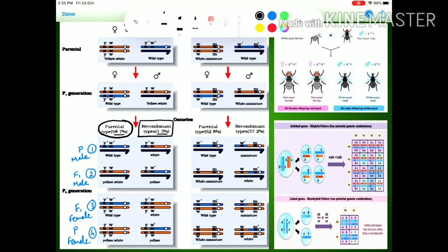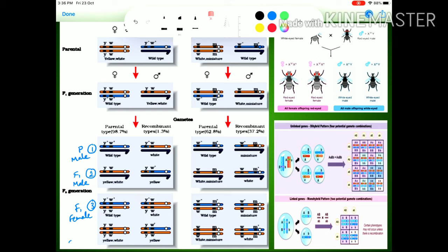They also produced new recombinant types in very small quantities — only 1.3% recombinant type was produced in F2 from selfing F1 in Cross 1. The recombinant combinations include Y+ with w (without star), y (without star) with W+, and similar new combinations. The quantity of recombinant type is very low in this Cross 1 experiment.